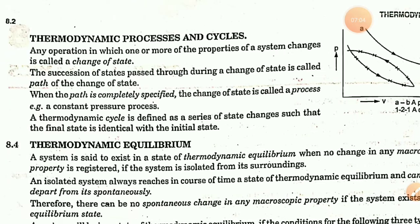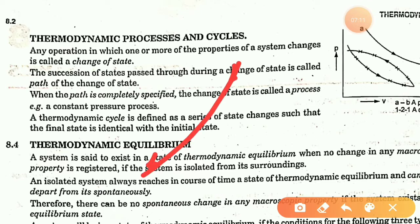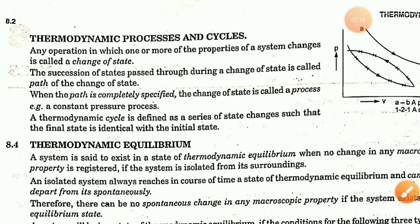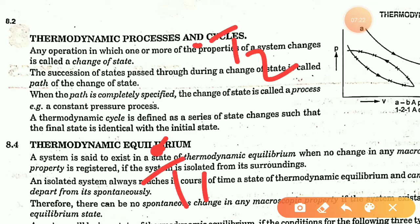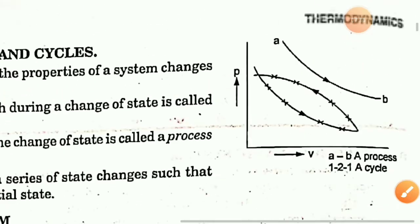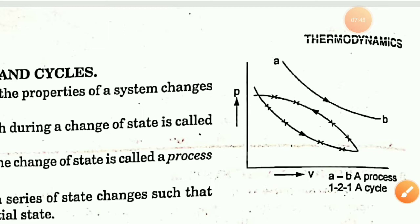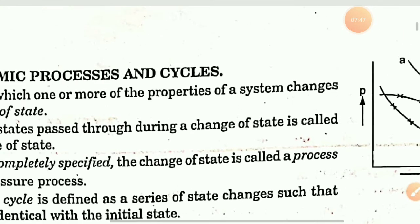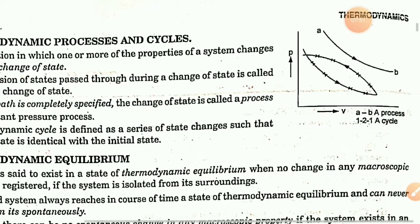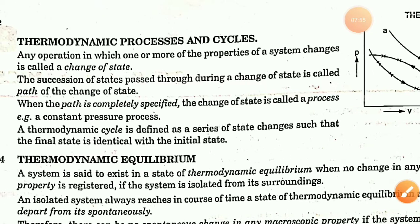What is a process and a cycle? A change of state is called a process. For example, if we heat a system from temperature T1 to T2, that is a process. From T2 to T3 is another process. If you look at a diagram and the process is complete — returning to the initial state — then it is called a cycle. The path followed during a process is called the path of the process.